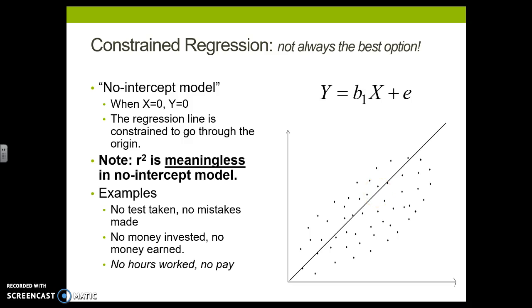There are reasons why you might do this though. If you're looking at tests taken and mistakes made, if I don't take a test, then I can't make any mistakes. So 0, 0 makes sense. Or if I don't invest any money, then I don't earn any money. So 0, 0 might make sense there too.